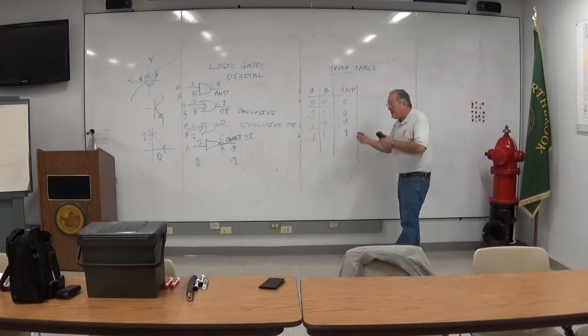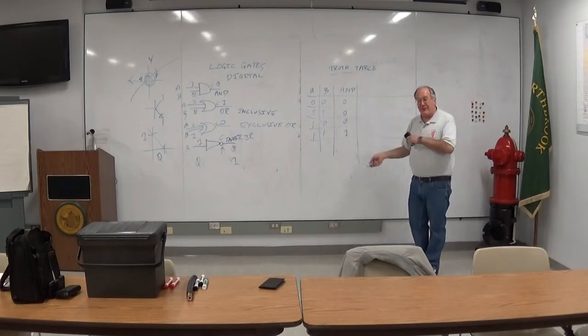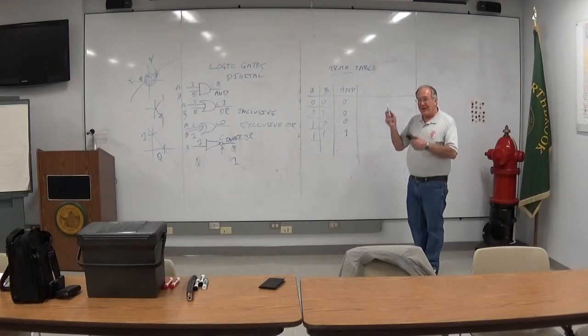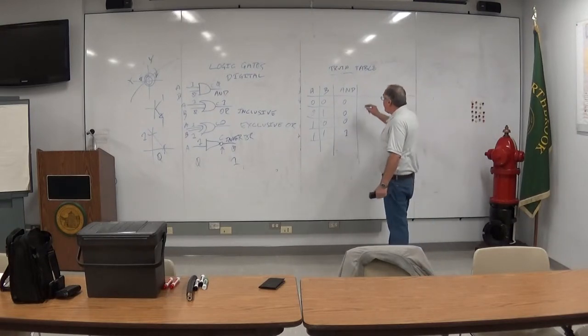Truth table, because what's true? That's another binary possibility. True, false. High, low. On, off. Up, down. All right. That's the AND.